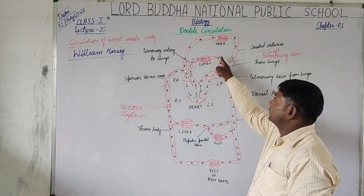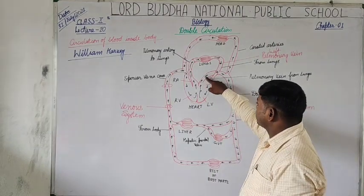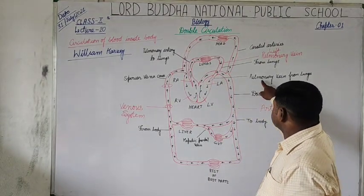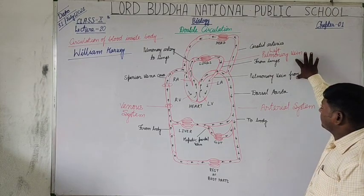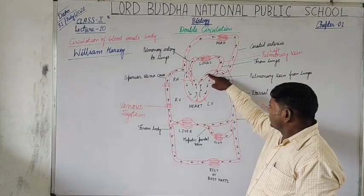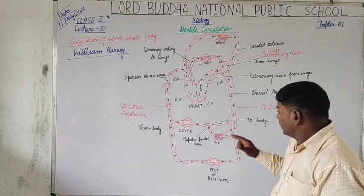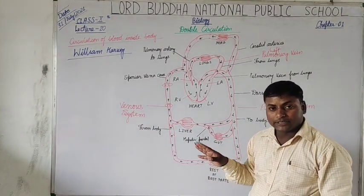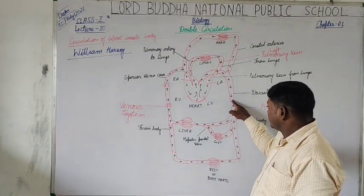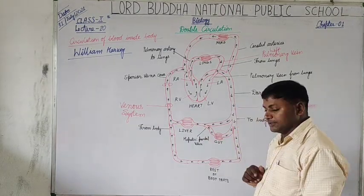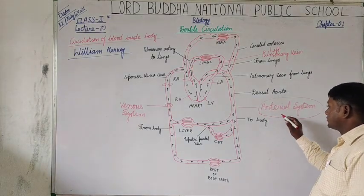From the left atrium, oxygenated blood is distributed to the head part and upper part of the body. The oxygenated blood is then sent to the rest of the body with the help of the dorsal aorta. Since there are no cellular walls present in these vessels, these are arteries, and this portal system is called the arterial system.